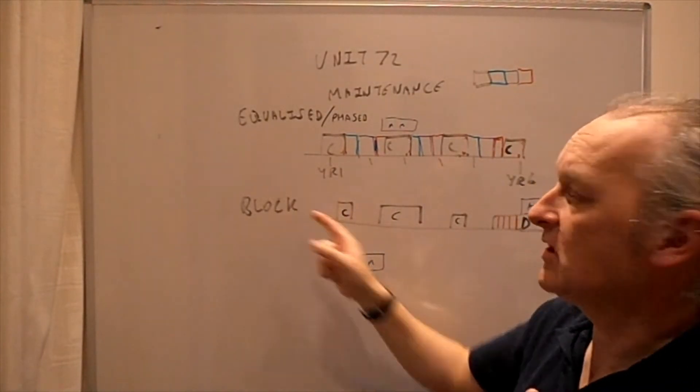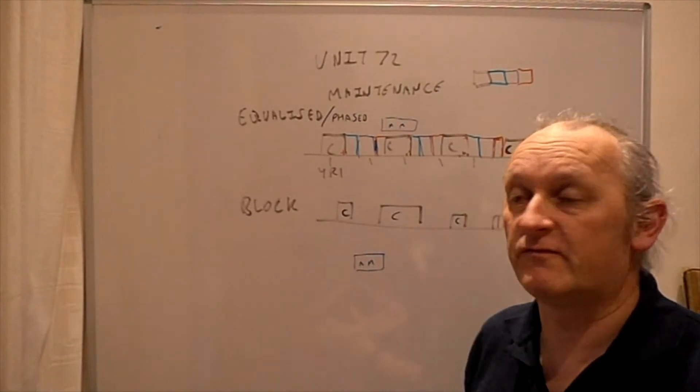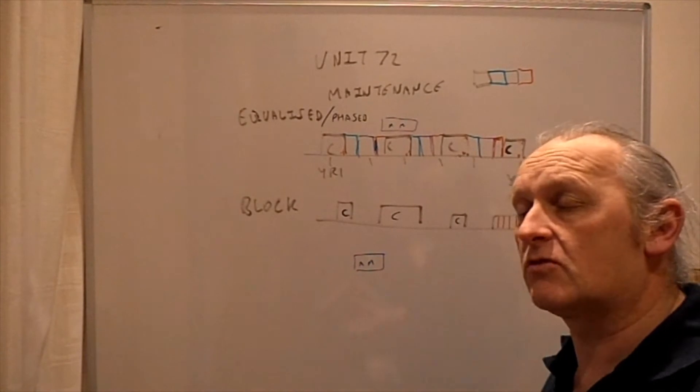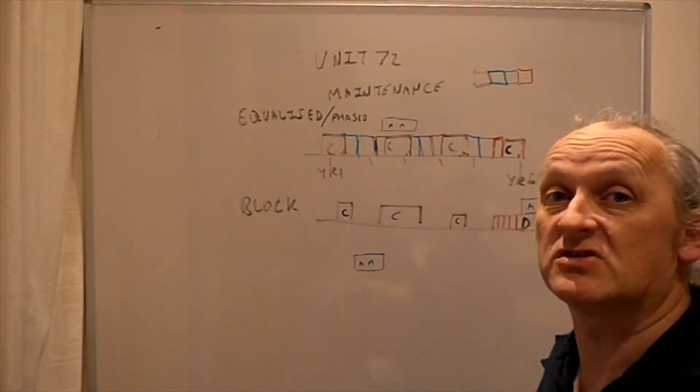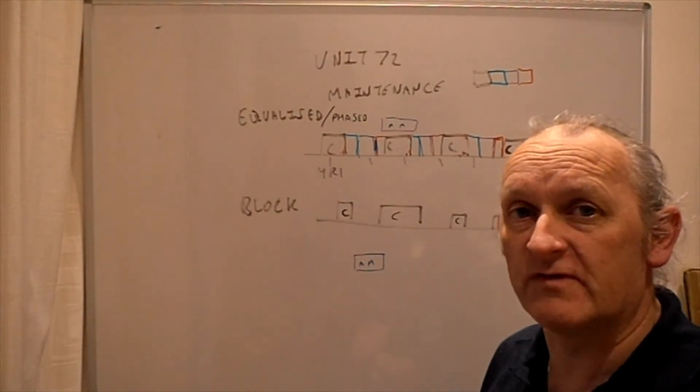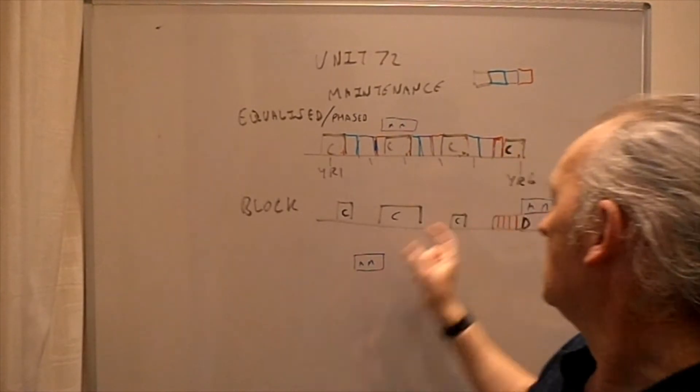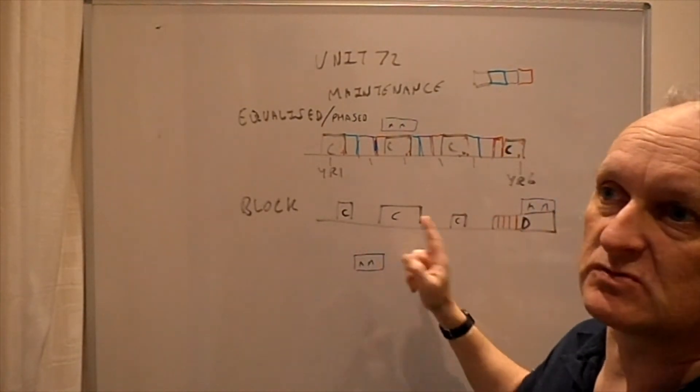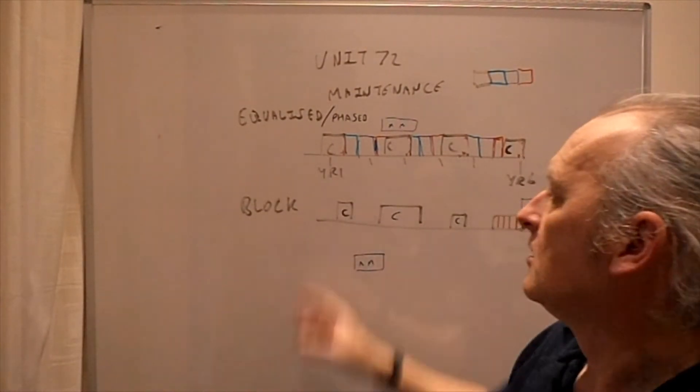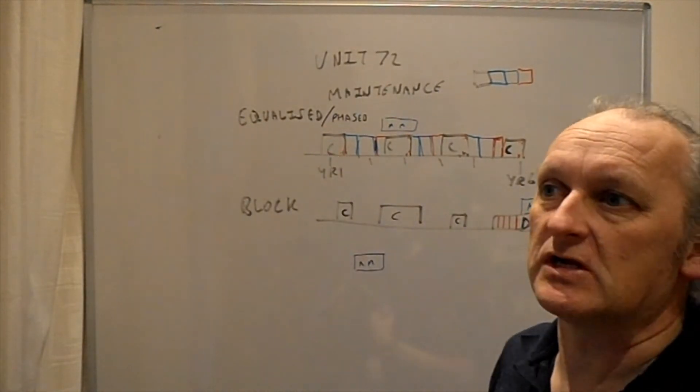Hopefully that explains why the block system is better for fitting in a major modification or something you haven't foreseen, like the 737 MAX problem with its flight control system. They had to do research to see if it could be fixed. That time fits in this system better. This system is better at coping with things that aren't quite happening to plan, so it's slightly more flexible for major modifications. This one allows more flexibility to keep the aircraft in the air longer.